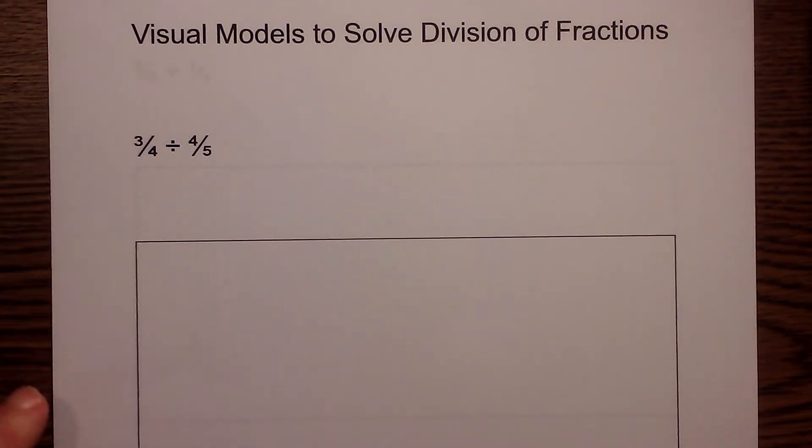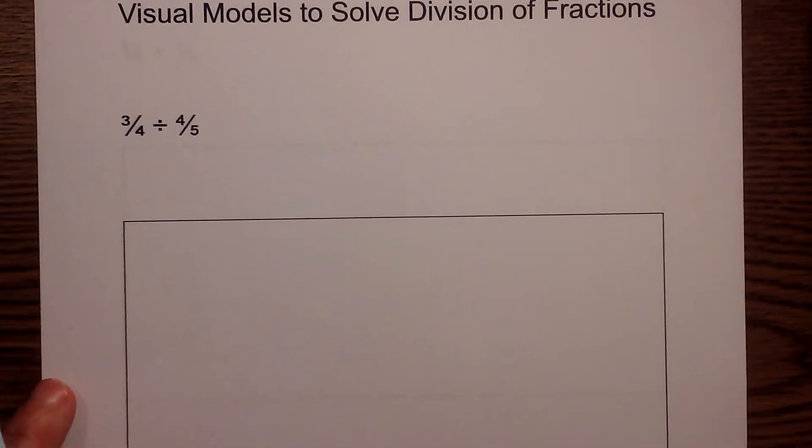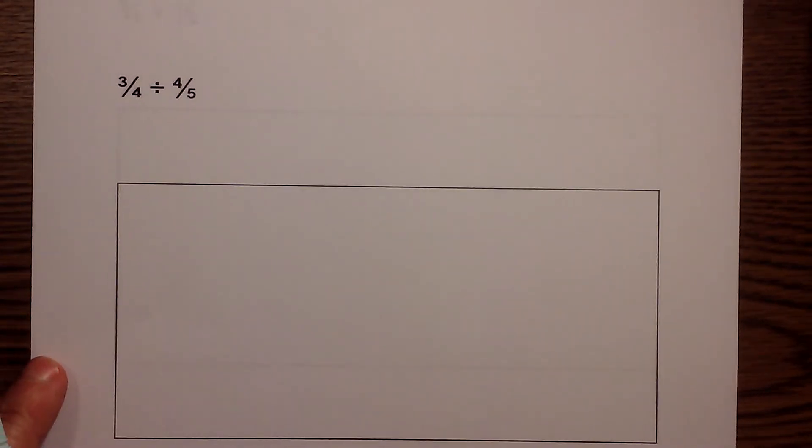Let's first look at this fraction. The visual model I'm going to use is this box and I'm going to add some vertical and horizontal rows and columns.